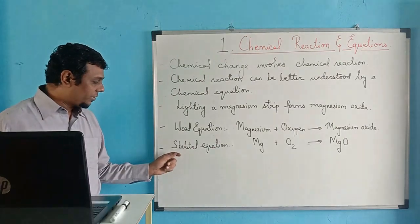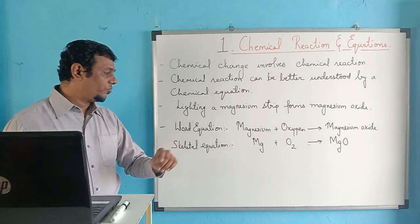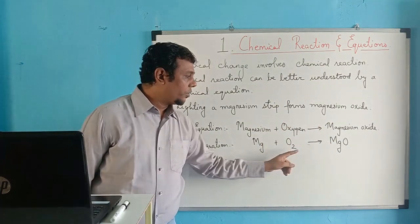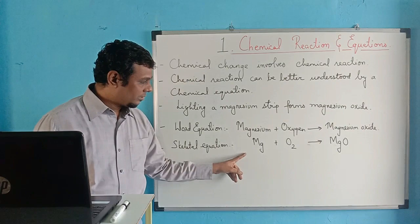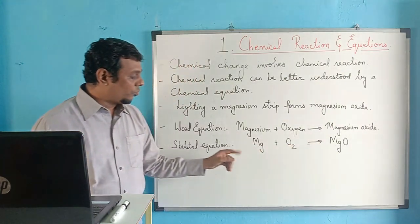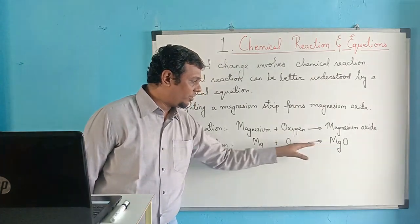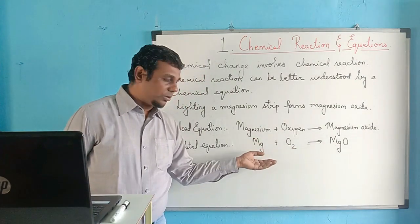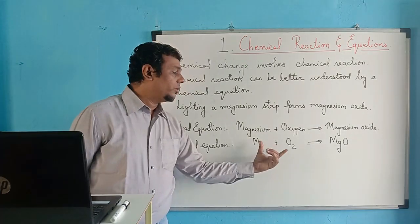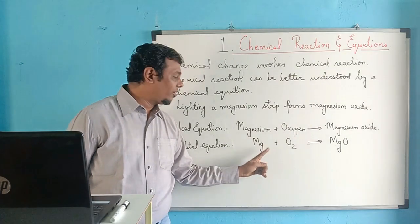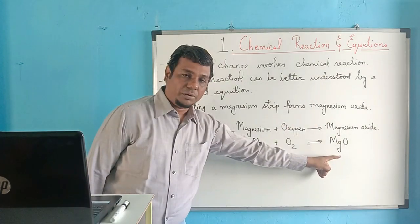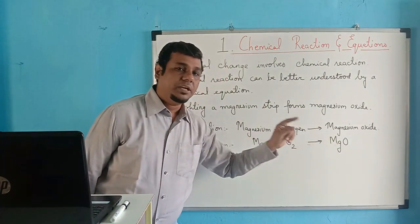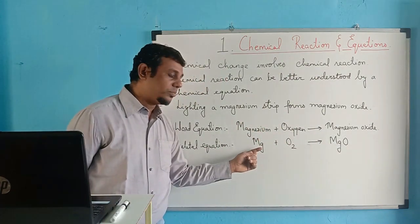Let us make it simpler — a skeletal equation. The formula for magnesium is Mg, formula for oxygen is O2, which gives MgO. This is a skeletal equation. There are two elements on the left-hand side of the arrow and one compound on the right-hand side. The elements or compounds on the left side of the arrow are called reactants. Magnesium oxide does not have the same properties as magnesium.